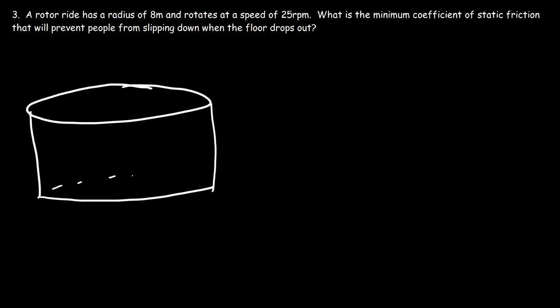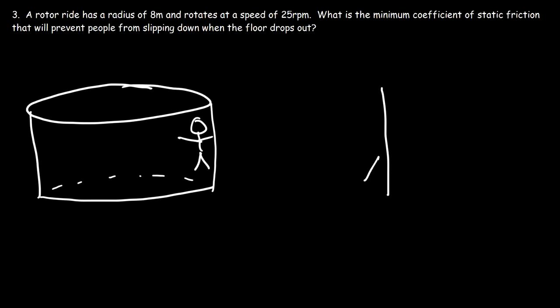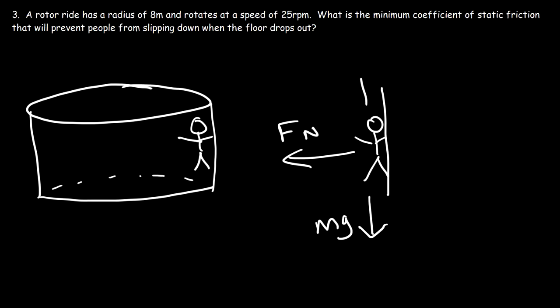A typical rotor ride looks like a cylinder. As the ride spins and the floor drops out, the person, if moving fast enough, will not fall down. The person wants to fly outward, but the curvature of the room forces him to turn in a circle. The wall exerts a normal force on the person — the person feels pressed against the wall, but inertia wants him to keep going forward. The wall exerts a normal force inward, the person's weight acts downward, and static friction prevents him from sliding down.